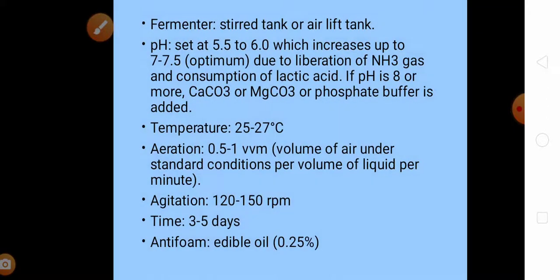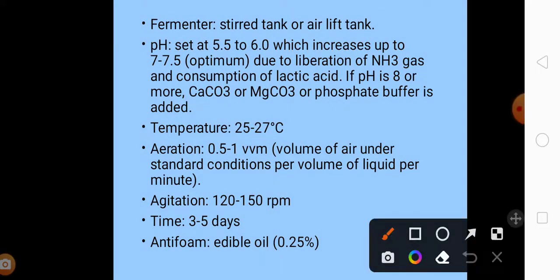Next is the kind of fermenter that is used for the production. Generally stirred tank or airlift tank is used because, as I said earlier, production of penicillin is an aerobic process, hence agitation is continuously required for the production of penicillin.